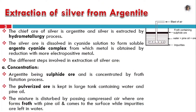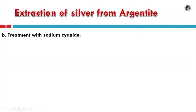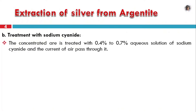We compress it, then the sulphide ore will float and we collect the concentrate. Then we will use chemical methods. We will use sodium cyanide to treat the concentrated ore.